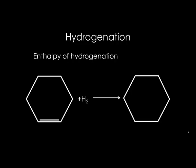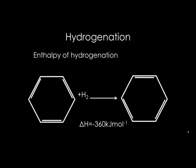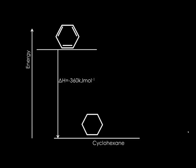Another piece of evidence would be to look at enthalpies of hydrogenation of unsaturated compounds. If you look at the enthalpy of hydrogenation of cyclohexene, it is −120 kJ per mole, which would suggest that Kekulé's structure would have an enthalpy of hydrogenation three times this value: −360 kJ per mole. However, when you do the experiment, you can see that benzene has an enthalpy of hydrogenation much lower than predicted, which is more evidence against Kekulé's structure.